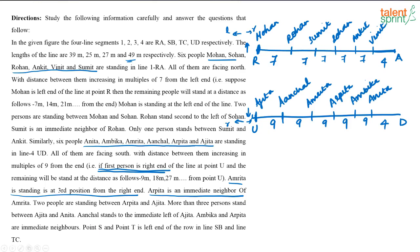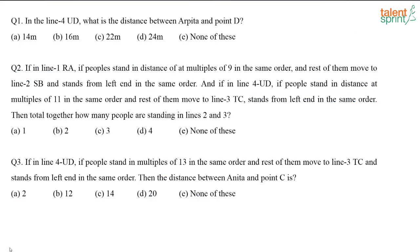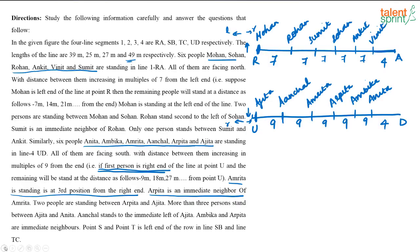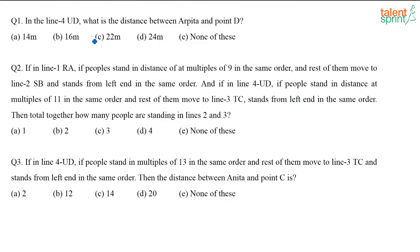Point S is the left end of line SB and point T is the left end of line TC. Now for the first question: in line 4 UD, what is the distance between Arpita and point D? The distance is 9 + 9 + 4 = 18 + 4 = 22 meters. Option C is the answer.